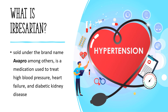Irbesartan, sold under the brand name Avapro among others, is a medication used to treat high blood pressure, heart failure, and diabetic kidney disease. It is a reasonable initial treatment for high blood pressure. It is taken by mouth.